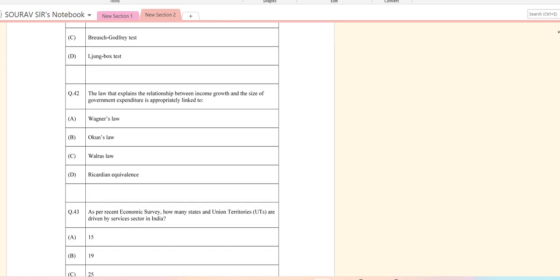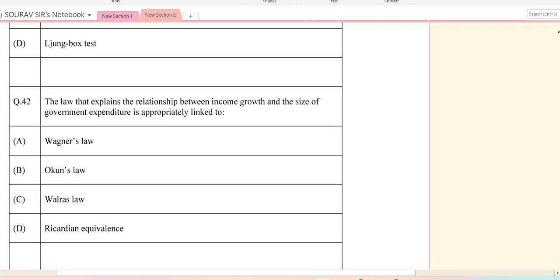Question 42: The law that explains the relationship between income growth and the size of government expenditure is actually called Wagner's law. They say that if the income is growing, the size of the government is also positive, so there is a positive relationship among them.